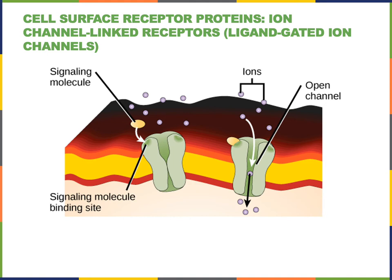One type of cell surface receptor protein is an ion channel-linked receptor, which is also known as a ligand-gated ion channel. We'll see an example where the neurotransmitter is the intercellular signaling molecule — that is, the ligand — binding to the cell surface receptor. When the ligand-gated ion channel becomes activated, it changes shape in order to open the ion channel, allowing ions to flow into the cell, which can then create an intracellular signal.